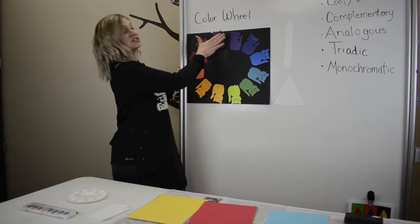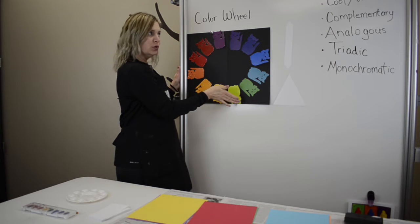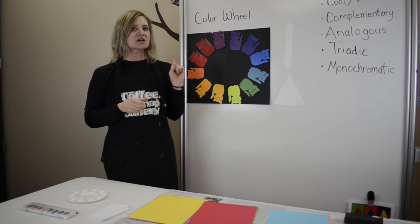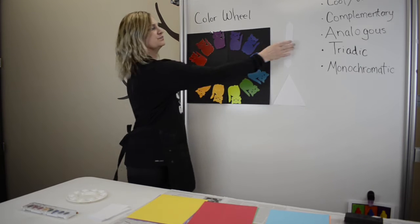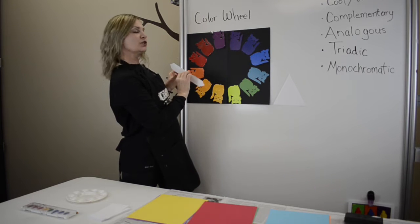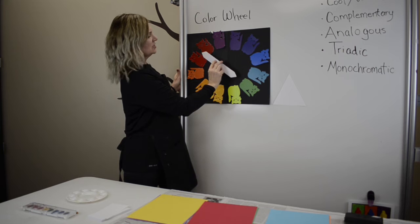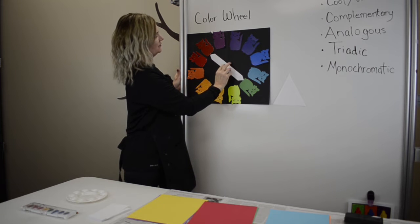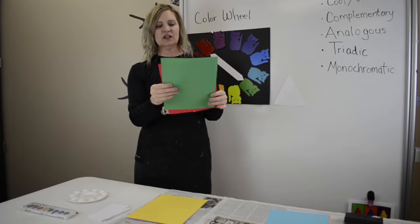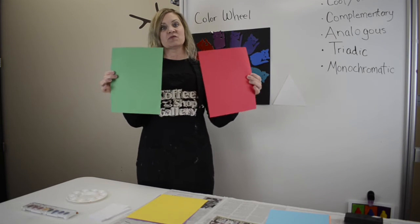Today we will be talking about the different arrangements of our colors. We did say we have warm, we have cool colors. We also have complementary colors. Complementary colors are opposite each other on the color wheel. If I were to put my line, red and green are opposite each other on the color wheel. Here are my red and my green.